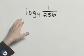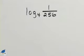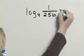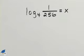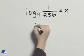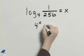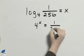In order to evaluate log base 4 of 1 over 256, we will first set this equal to some variable and then rewrite this in exponential form. So we'll have 4 to the x equals 1 over 256.